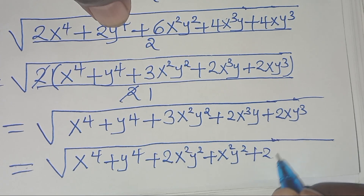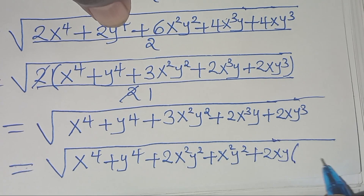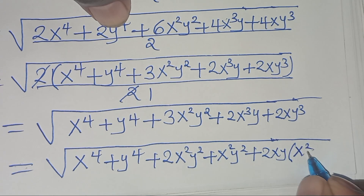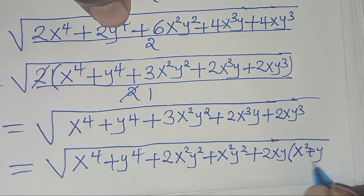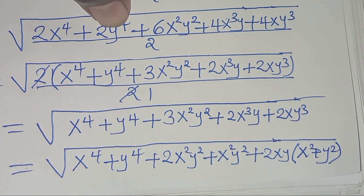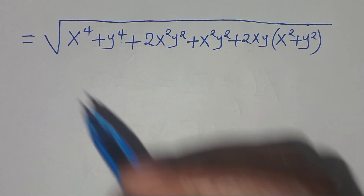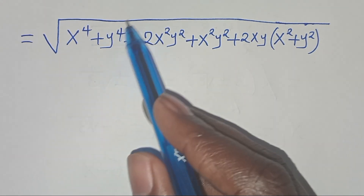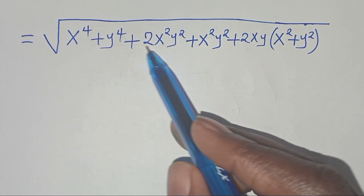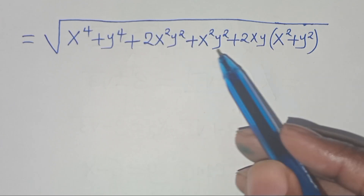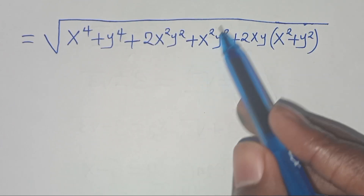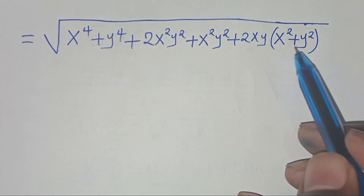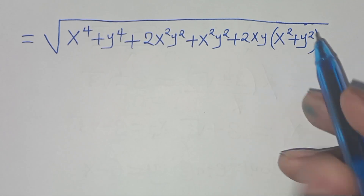Now if you check here we can factor out 2xy, so that we have 2xy into the parentheses x squared plus y squared. So now we have the square root of x to power 4 plus y to power 4 plus 2x squared y squared, plus x squared y squared, plus 2xy into the parentheses x squared plus y squared.